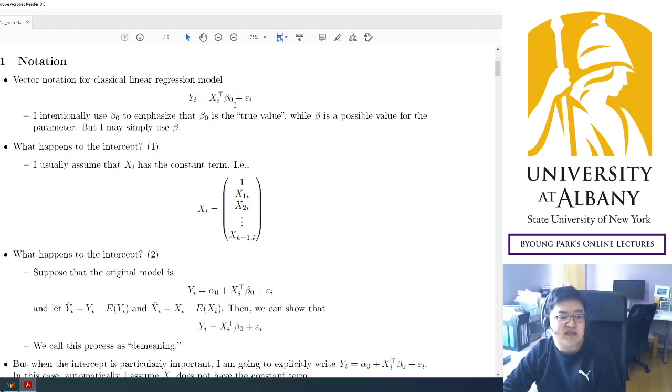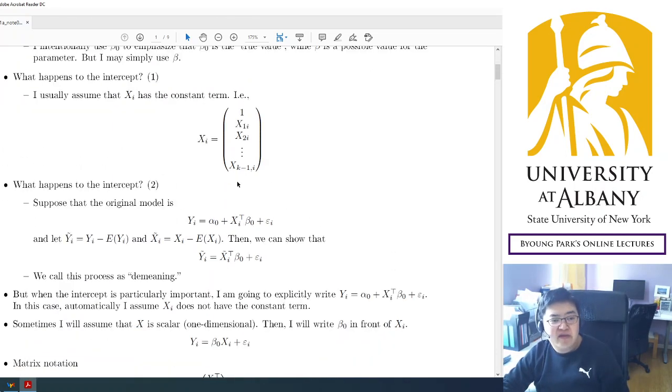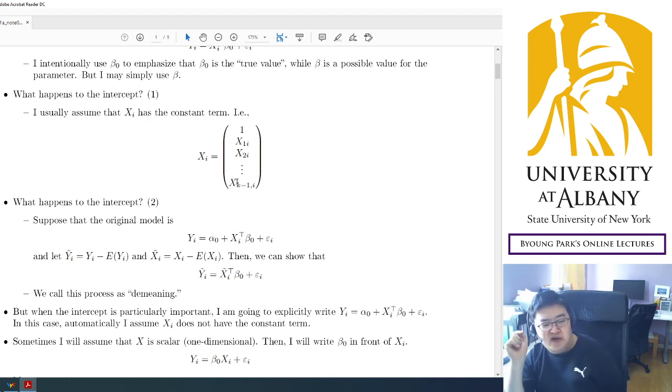Also, in most cases, I will assume that x is k dimensional. The dimension of x is k. So for each individual, we observe k different variables, like age, experience, and education, test scores, whatever you have. So the number of the variables is k. But for the sake of explanation, for educational purposes, k dimension is sometimes redundant. So in many cases, the ideas, the intuition can be delivered with one dimensional variable.